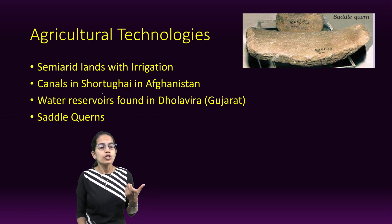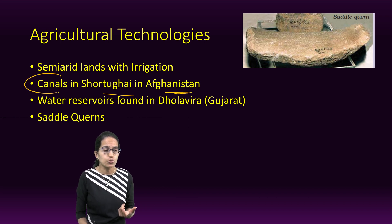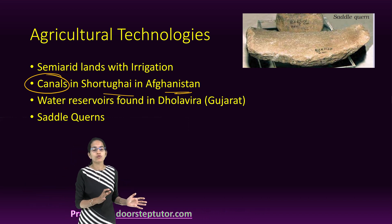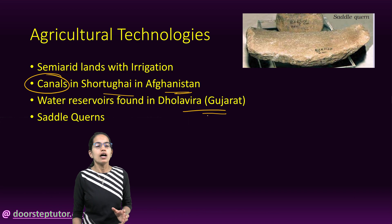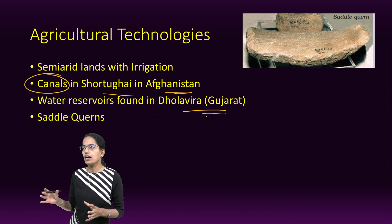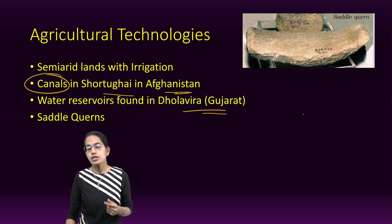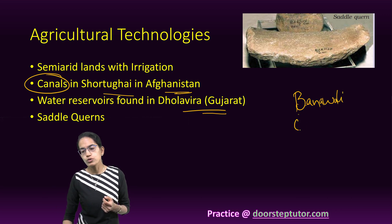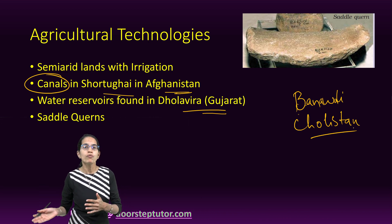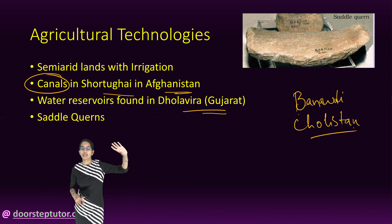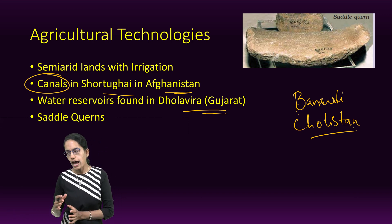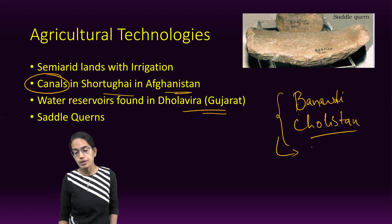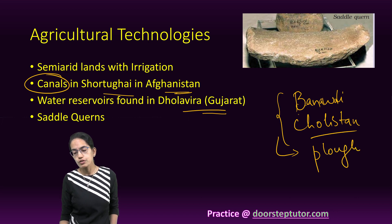For example, in the regions of Shortughai in Afghanistan, canals were seen, but these canals were not seen in the regions of Mohanjodaro or Harappa. Water reservoirs were found in Dholavira in the regions of Gujarat. Terracotta-made plows have been found in Banavali in Haryana and also in Cholistan. Both of these have been associated with the early Harappan periods, and along with Kalibangan, are known for the plow and its usage.